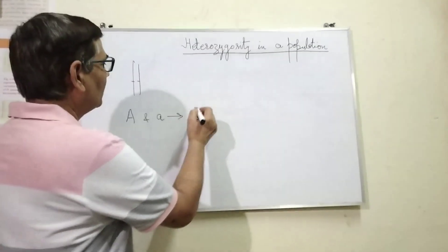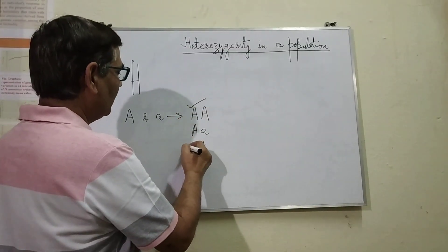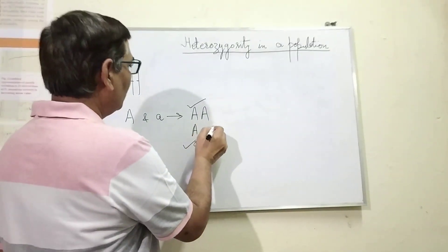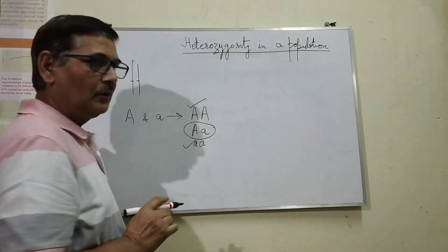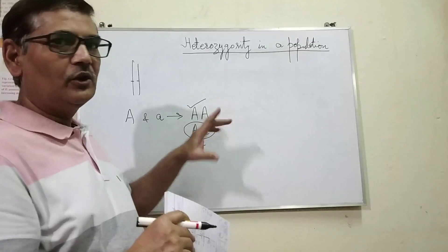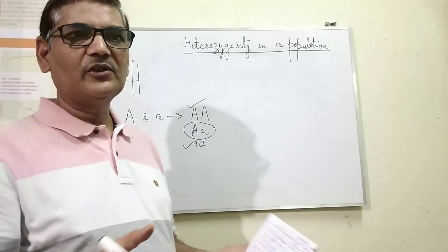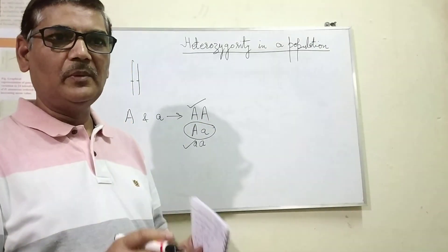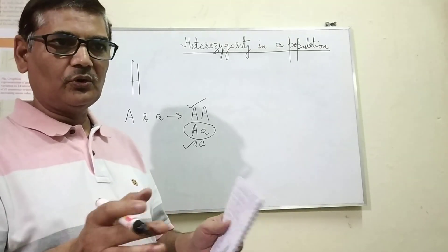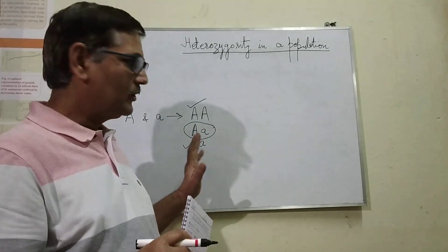Capital AA and small aa are homozygotes. Now, heterozygotes will have both alleles — one allele may be dominant over the other, or these two alleles may be co-dominant, or they could show incomplete dominance. Such kinds of things may be there.